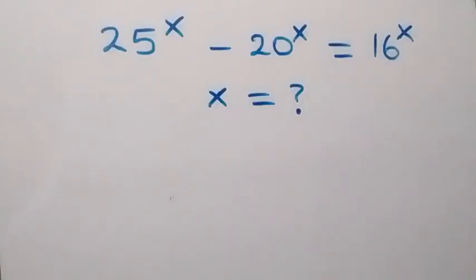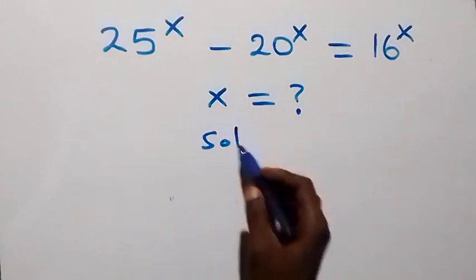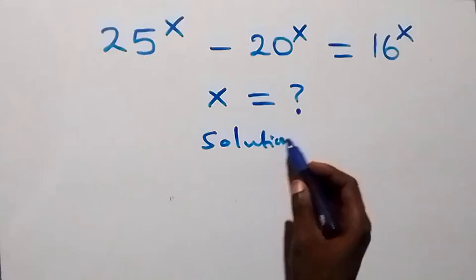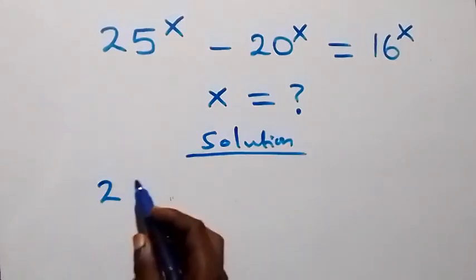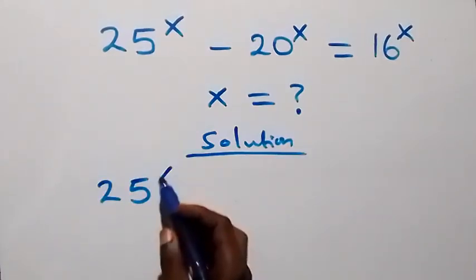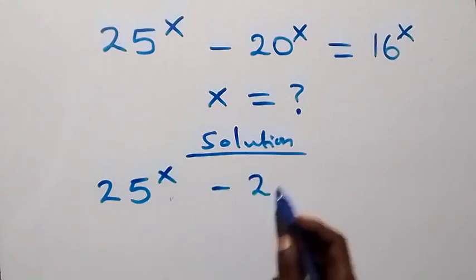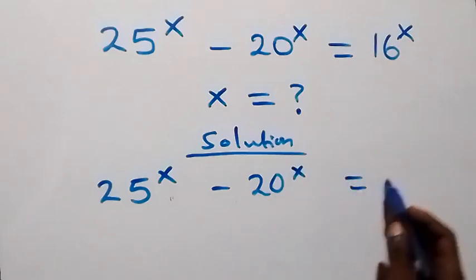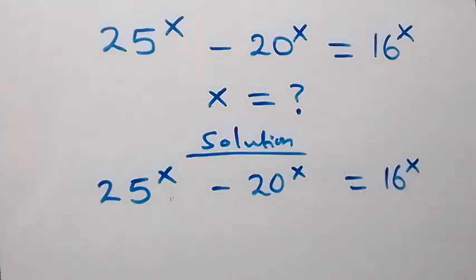Hello, you're welcome. Here's how to solve this nice exponential problem. We are given: 25 raised to power x minus 20 raised to power x equals 16 raised to power x.